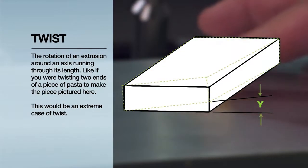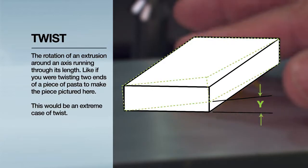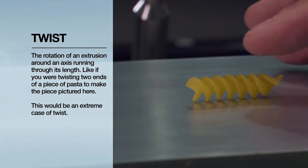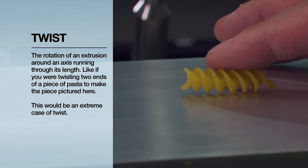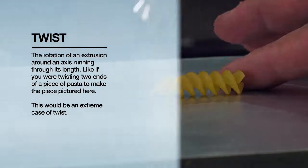Twist is something quite different. Twist describes the rotation of an extrusion around an axis running through its length, like if you were twisting two ends of a piece of pasta to make the piece pictured here. This would be an extreme case of twist.